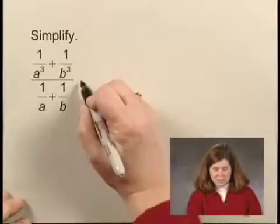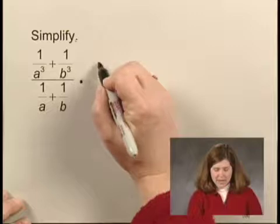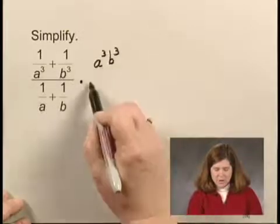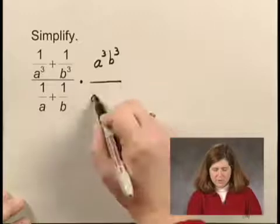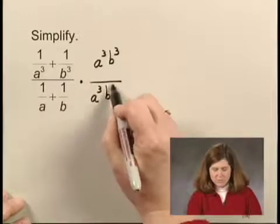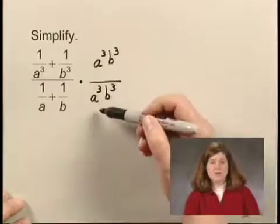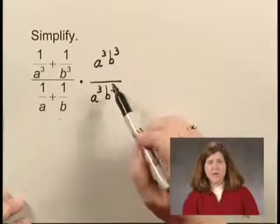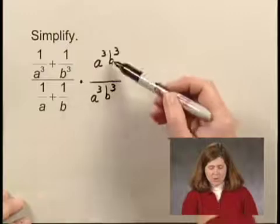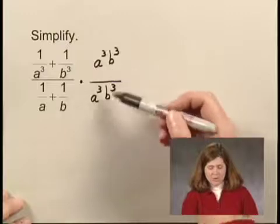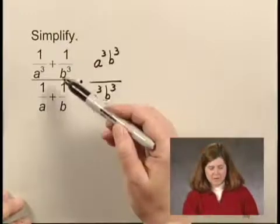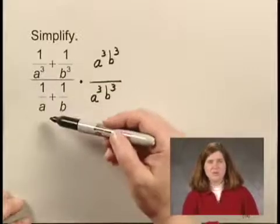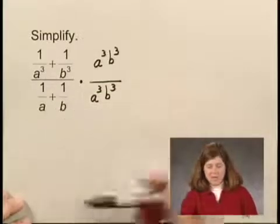So I am going to multiply by a-cubed b-cubed over a-cubed b-cubed. This is 1, so I'm not changing the value of my expression because I'm multiplying by 1. When I finish the multiplication, I should have none of these denominators left — I will have cleared out those denominators, and then I can simplify like I've simplified before.